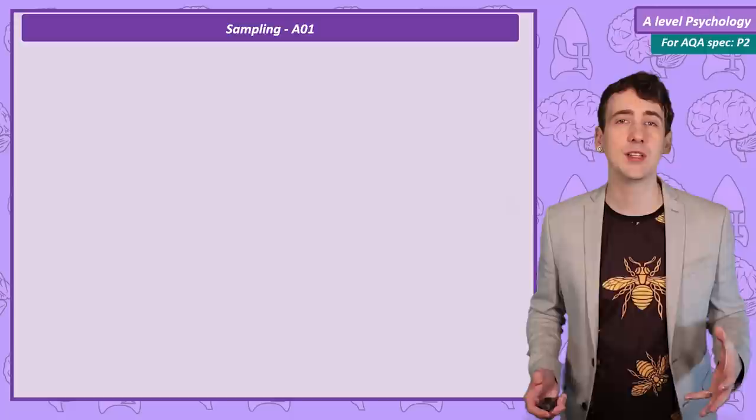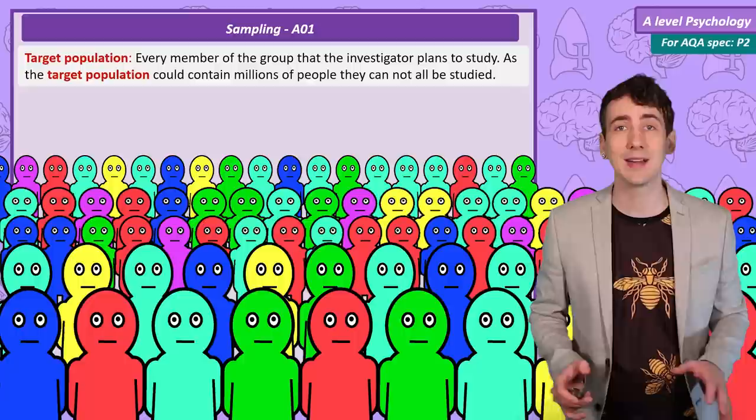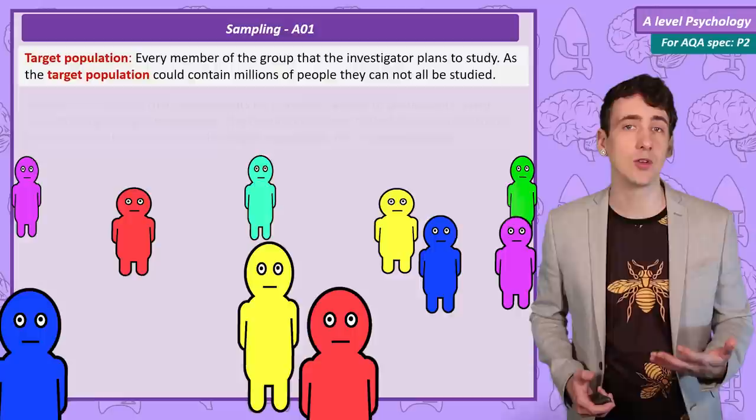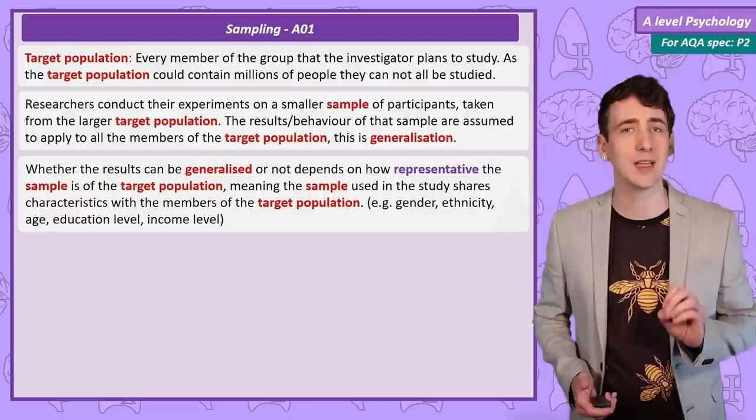Our first definition is for the term target population. This is every individual that forms part of the group that you plan to study, so likely it's going to be a very large number. If you're investigating pensioners, 4-year-old children, or sixth form students, we won't be able to test all of them — we need to take some of them, a sample. What we hope to do is get our results from that sample and then apply them back to the target population. This is called generalisation. However, members of a population vary in many ways, so ideally we want a sample that is representative of the larger population.